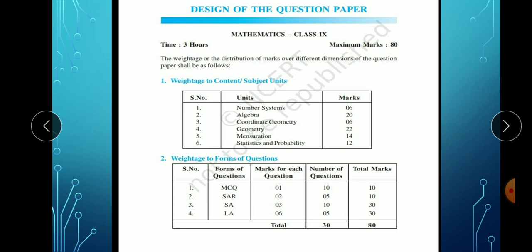Now we will see the weightage to form of questions. MCQs - that is fill in the blanks or choose the correct option and one line question answers. It has 1 mark for each question, number of questions 10, and total marks are 10.